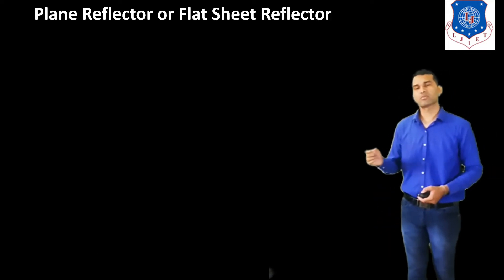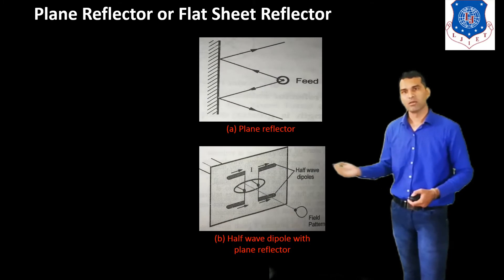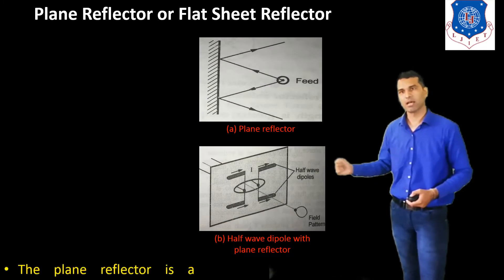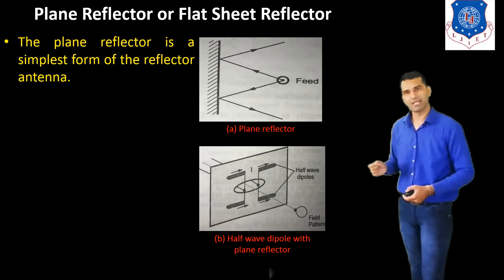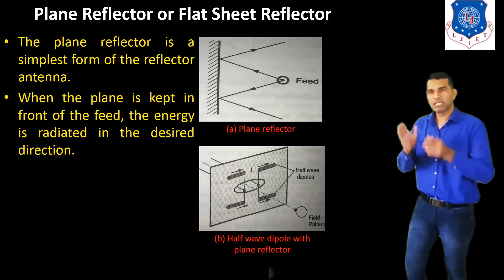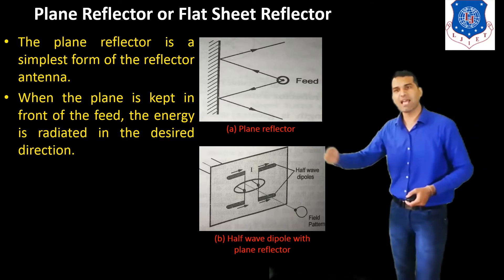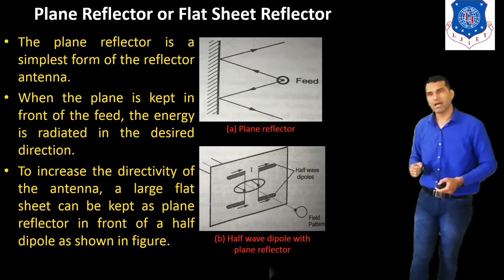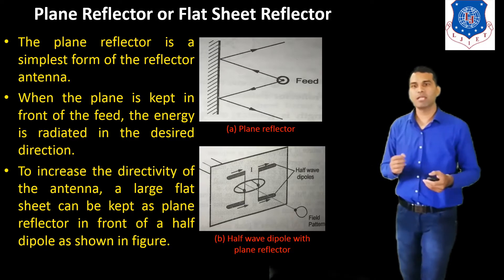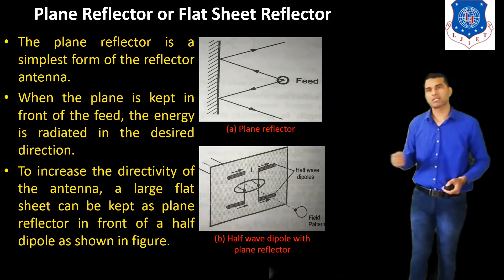Now we discuss about the first one — the plane reflector, also known as the flat sheet reflector antenna. The plane reflector is the simplest form of the reflector antenna. When the plane is kept in front of the feed, the energy is radiated in the desired direction. To increase the directivity of the antenna, a large flat sheet can be kept as a plane reflector in front of a half-wave dipole as shown in this figure.